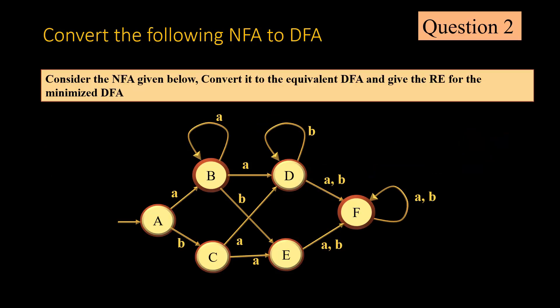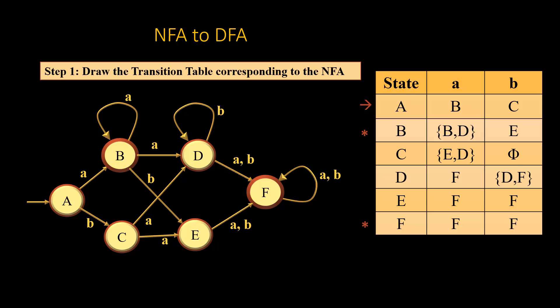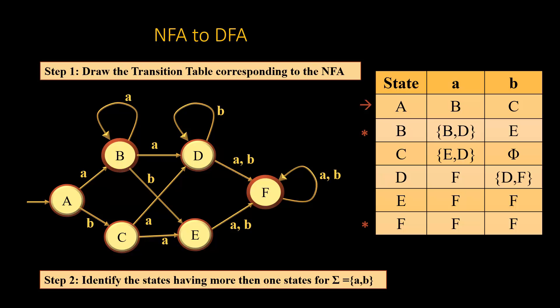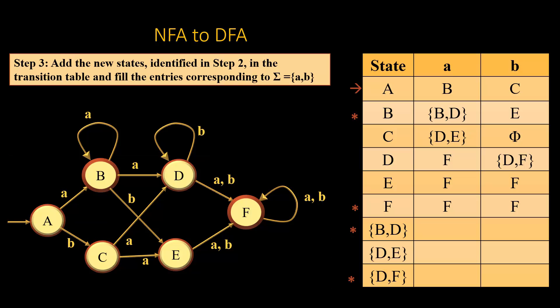Here is the second question. In this NFA we have six states and two final states, B and F. We follow the same steps: first draw the transition table corresponding to the NFA, then identify states with more than one transition. In this case we have three such combined states: {B,D}, {E,D}, and {D,F}. We add these three states to the transition table and check {B,D} on A.